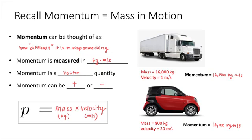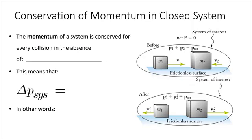I just wanted to show you a basic example of how to calculate momentum and remind you that momentum is not just about mass, but also about velocity equally. When we talk about collisions, we observe that the momentum of a system — in other words, the momentum of a group of objects — is conserved, or kept the same, for every collision in the absence of external forces.